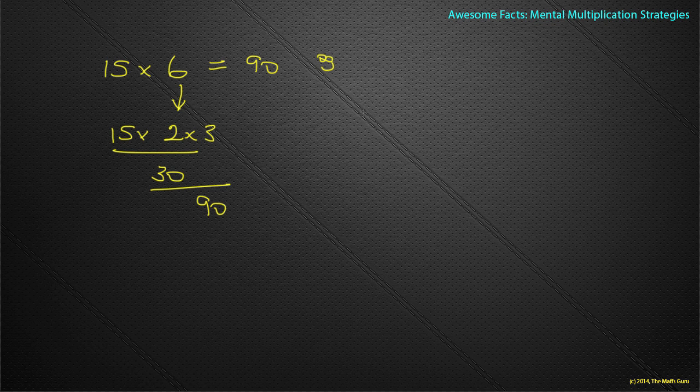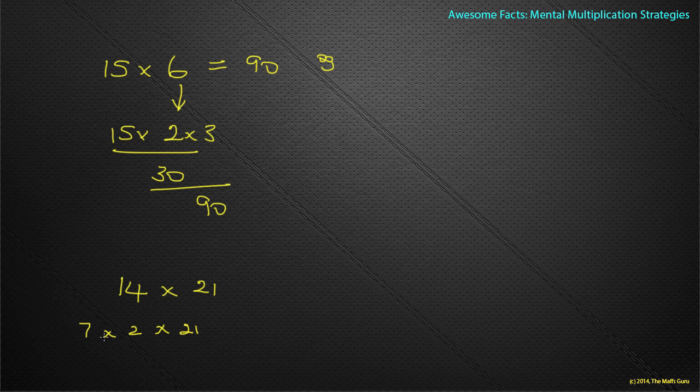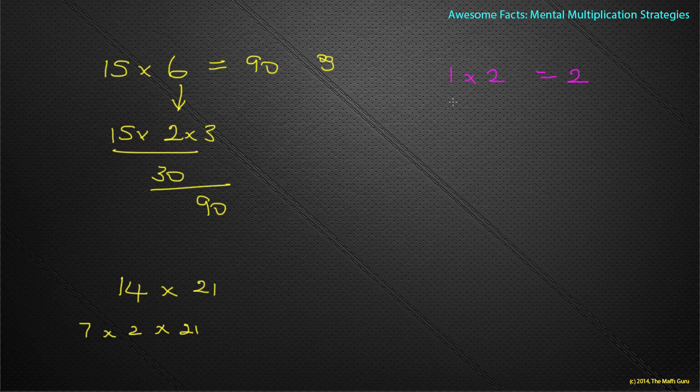Can we use this in another way? Yeah, what about 14 times 21, for example? Wow, that's tough. How do we do 14 times 21? Well, 14 is the same as 7 times 2 times 21. Now, that might look difficult, but the great thing about multiplication is, well, ask yourself this question. What is 1 times 2? We all know it's 2. And so, what is 2 times 1? It's also 2. Simple example.